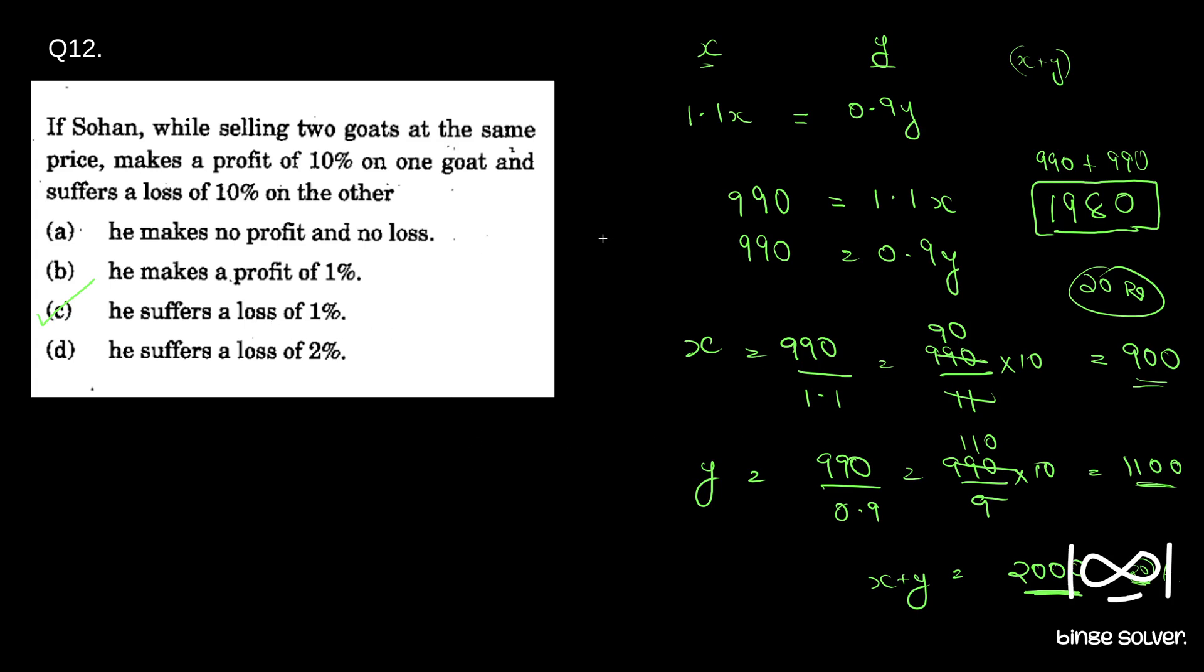He suffers a loss of 1%. So one common mistake a person could make is they could miss out that he's selling two goats at the same price.